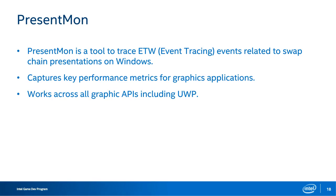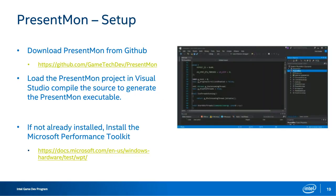Getting PresentMon up and running is a pretty straightforward process. You're going to download the source code from GitHub. Once downloaded, you'll open it in Visual Studio and build the executable. This was tested against Visual Studio 2017 and everything compiled just fine. One thing to note is that PresentMon has a dependency on the Microsoft Performance Toolkit. Without the Performance Toolkit installed, PresentMon will not compile. Download the latest version of the toolkit and everything should compile and run fine.